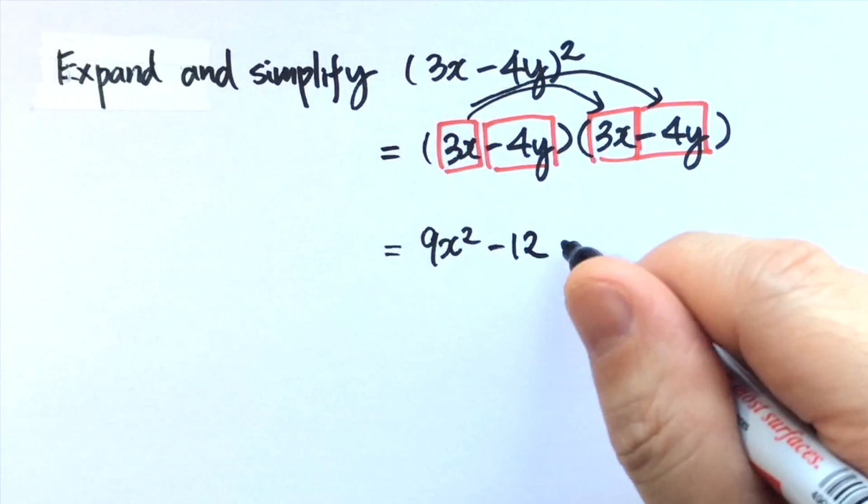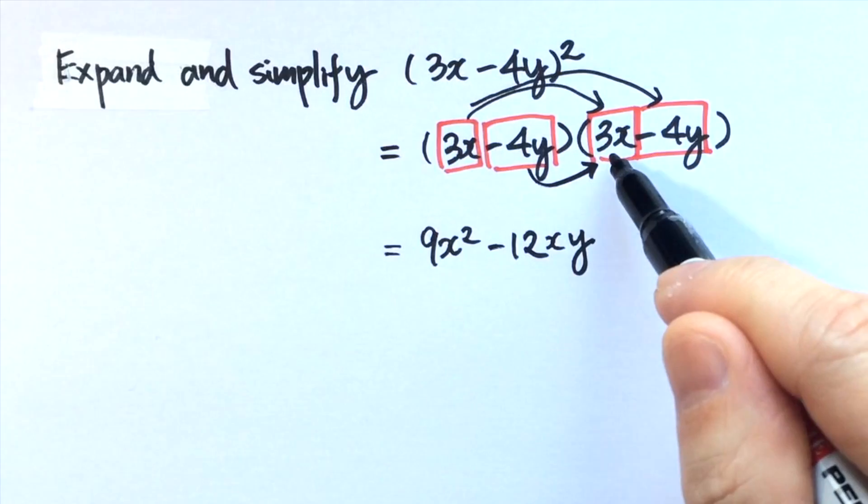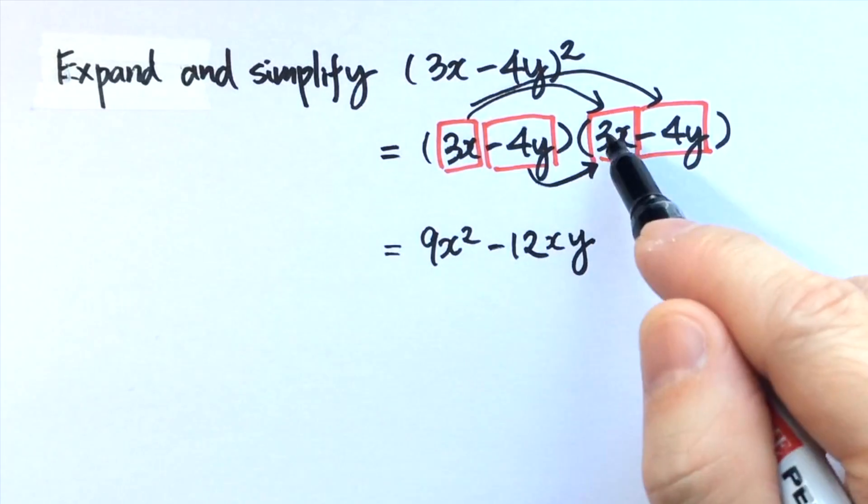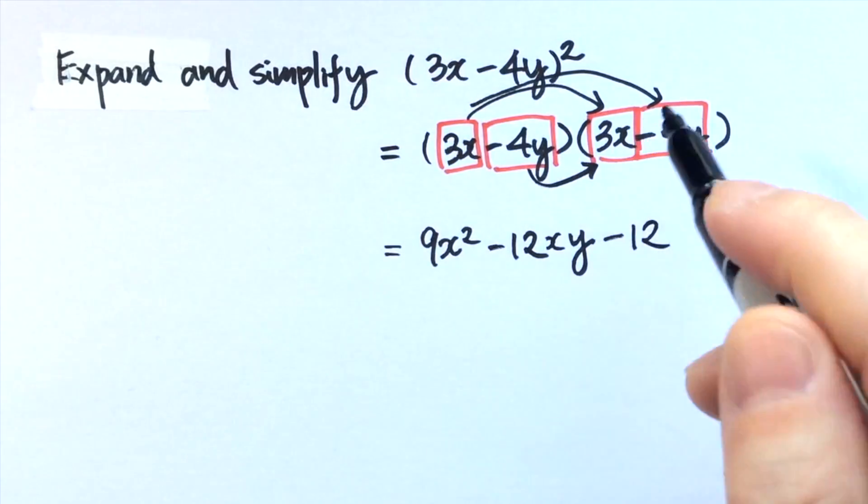Minus 4y times 3x. Again, minus 4 times 3, you get minus 12, y times x, we write it as yx.